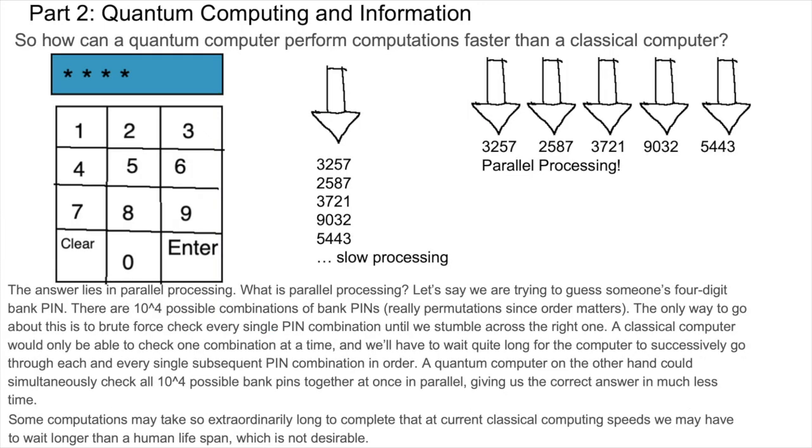So how can a quantum computer perform computations faster than a classical computer? The answer lies in parallel processing. What is parallel processing? Let's say we are trying to guess someone's four-digit bank PIN. There are 10 to the fourth possible combinations of bank pins, really permutations since order matters. The only way to go about this is to brute force check every single PIN combination until we happen to stumble across the right one. A classical computer would only be able to check one combination at a time and will have to wait quite long for the computer to successively go through each and every single subsequent PIN combination in order. A quantum computer, on the other hand, could simultaneously check all 10 to the fourth possible bank PINs together at once in parallel, giving us the correct answer in much less time.